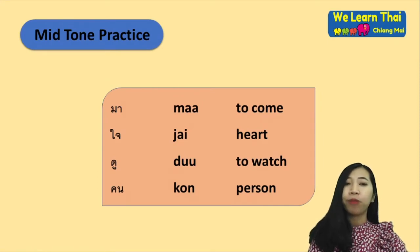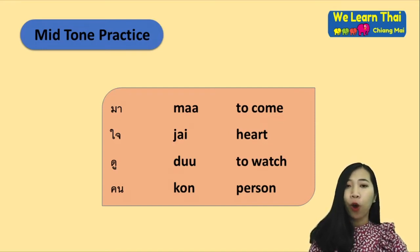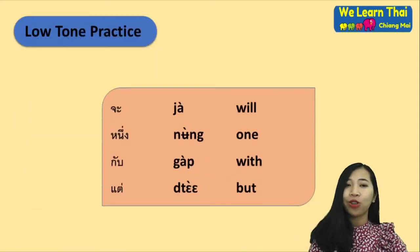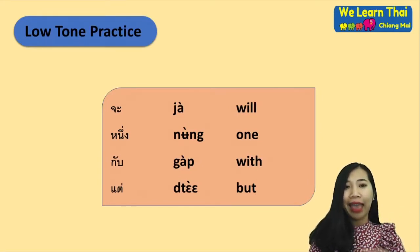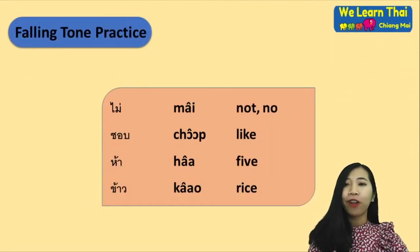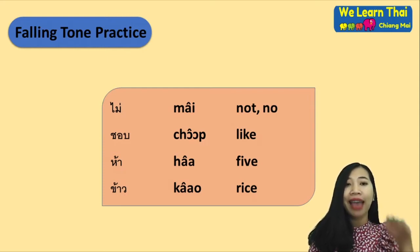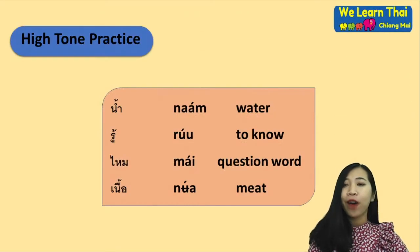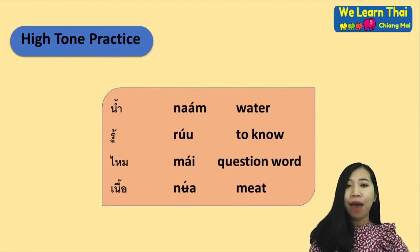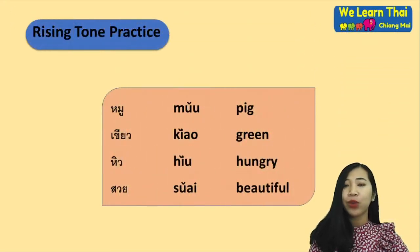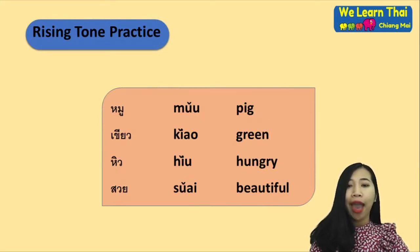For mid-tone practice: maa, jai, duu, khon. For low-tone practice: jaak, neung, gap, and dtae. For falling-tone practice: mâa, jàap, hâa, and kháo. For high-tone practice: náam, rúu, máa, and nǘ. And the last one — rising tone practice: mǔu, hiǔ, hiǔ, and sǔai.